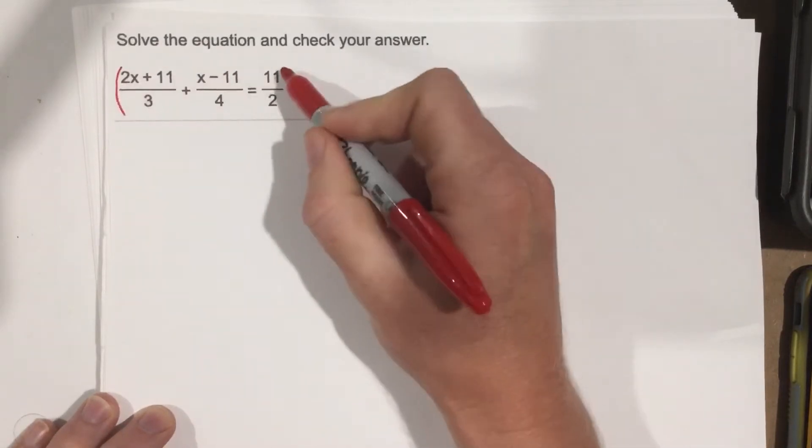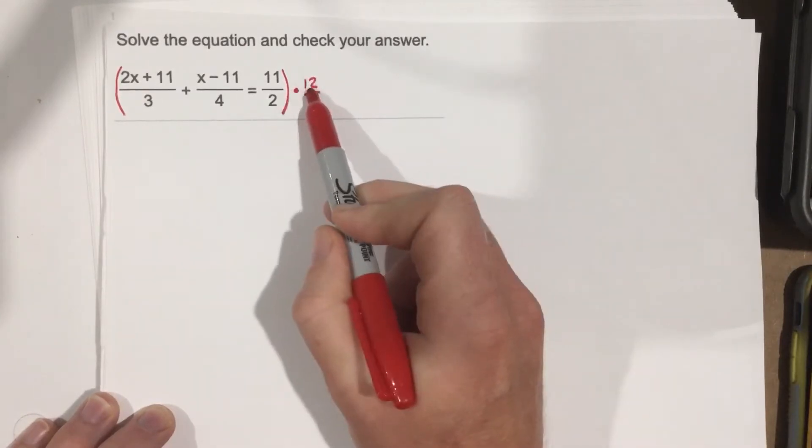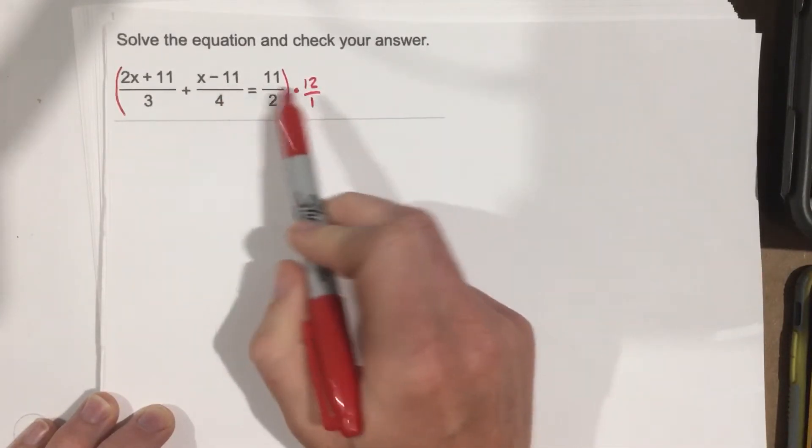To do that, we're just going to put parentheses around and say times 12 over 1. Now when you multiply each individual term by 12,